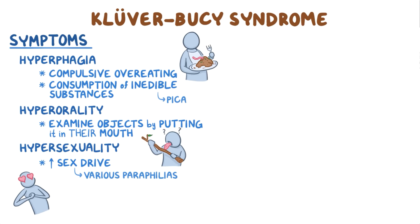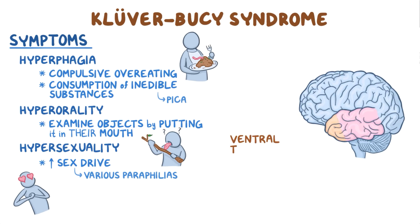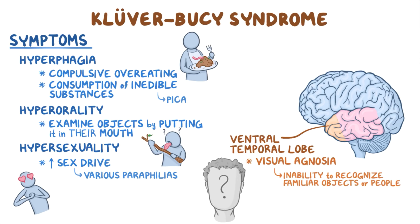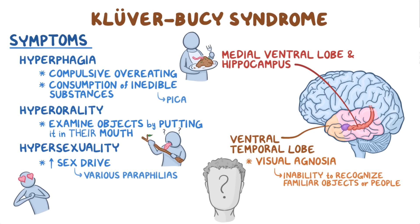In addition, damage to the ventral temporal lobe, which is responsible for visual processing, results in visual agnosia, or the inability to recognize familiar objects or people. Damage to the medial temporal lobe and hippocampus, which both play a role in memory formation, results in amnesia.